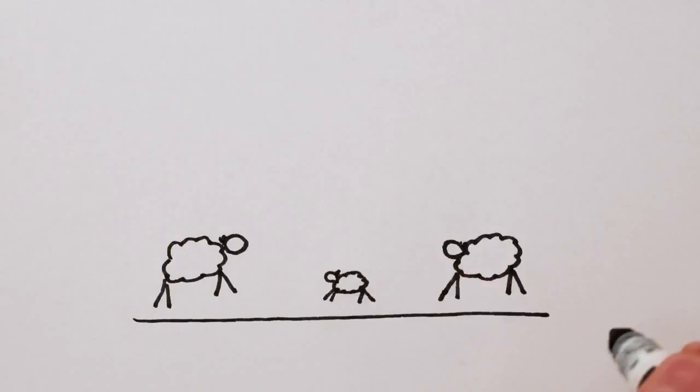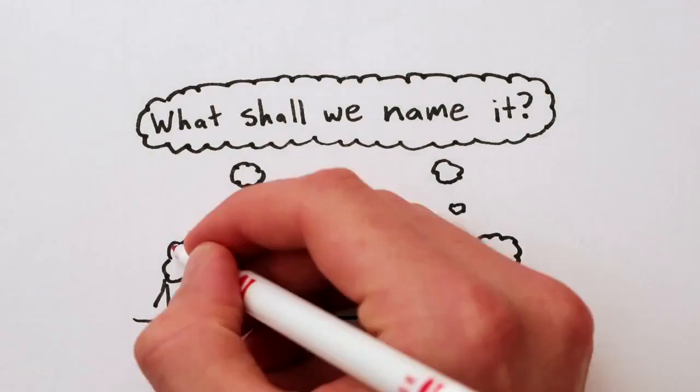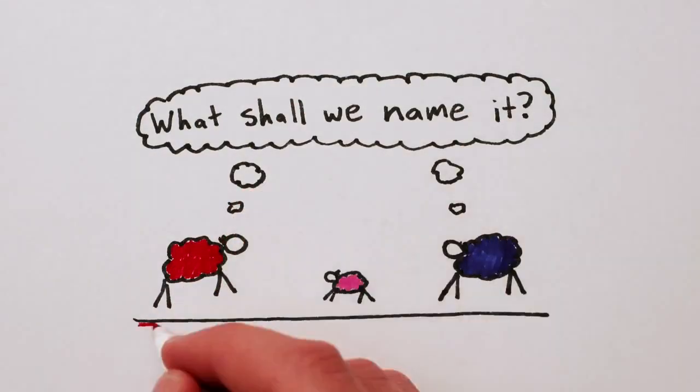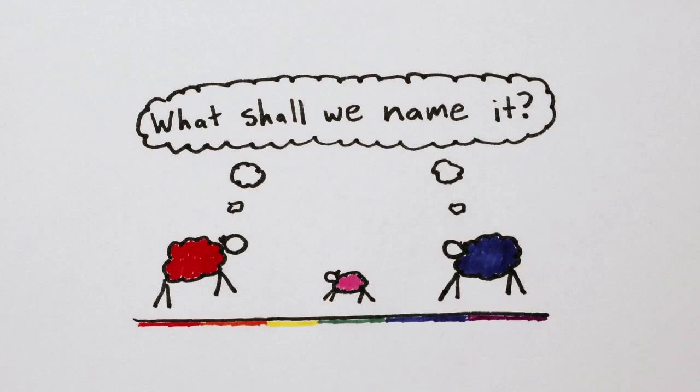It turns out that pink, or magenta, fuchsia, or whatever you want to call it, is actually a mix of red and blue light. Light from both ends of the rainbow that our brains see as one single color.